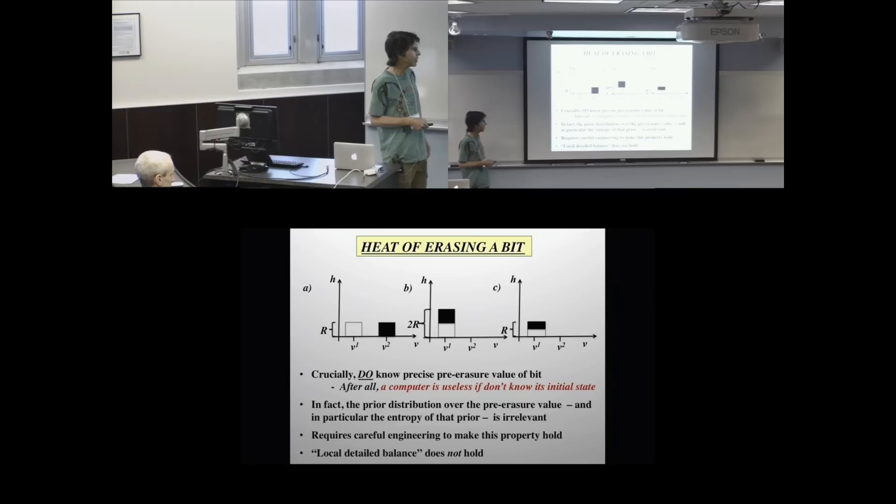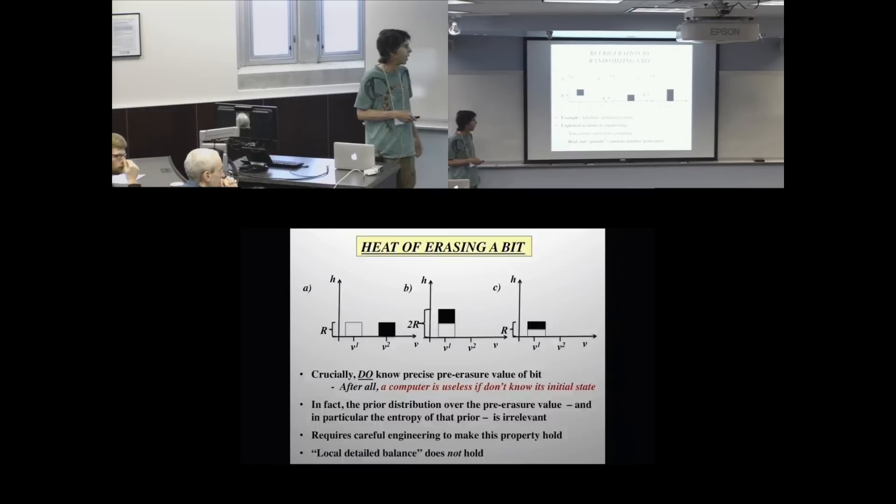It actually requires very careful engineering to make this property hold. In the lexicon, it's not micro-reversible. You violate local detailed balance, which is another way of saying that this beast, there are a bunch of very smart people who put it together in a very careful way so that all of this would work, because they want your computer to erase that bit no matter what its initial state was. That is different from a lot of things in the natural world, like chemostats, ideal gases, and so on. A fascinating question that right now nobody knows: do biological systems obey local detailed balance? Are they like engineered systems or like gases?